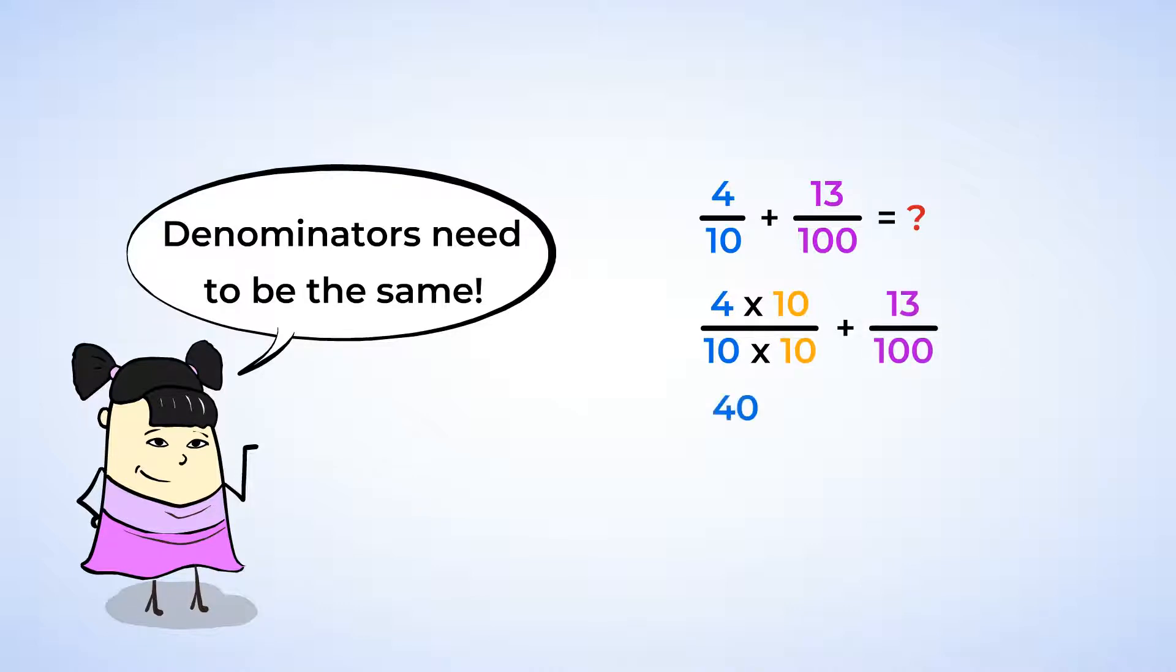4 times 10 is 40. So 4 tenths is equal to 40 hundredths. And now we can add. 40 plus 13 equals 53. And so the answer is 53 hundredths. Alright! Let's check out another problem now.